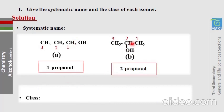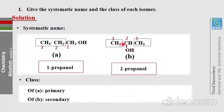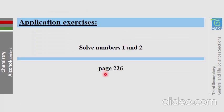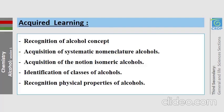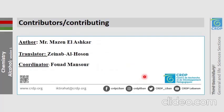Regarding classes: 1-propanol is primary because only one alkyl group is bound to carbon number 1 (the functional carbon), and 2-propanol is secondary because two alkyl groups are connected to its functional carbon. For next time, solve exercises 1 and 2 in your chemistry book on page 226. Thanks for your attention and goodbye.